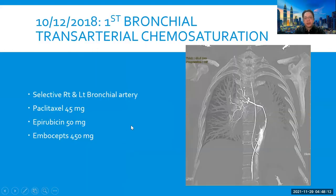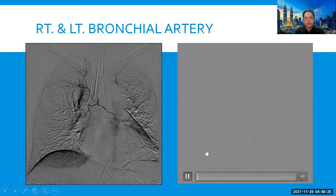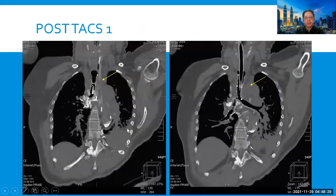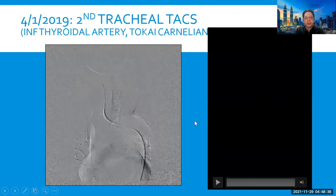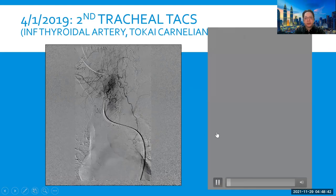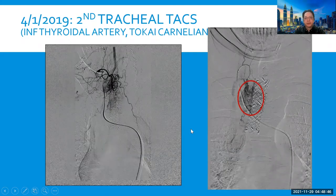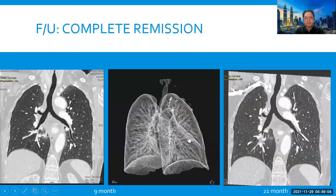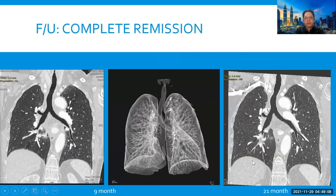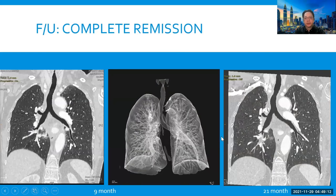During argon plasma coagulation, the probe sometimes caught fire, which was easily extinguished with normal saline. After two hours of intensive work, we managed to debulk the tumor over the carina. HPE showed no NGS and no cribriform pattern relevant to the cancer type was detected. A covered tracheal stent was inserted. Two weeks later, right and left bronchial artery transarterial chemo-saturation was performed with paclitaxel 45 mg and epi-adriamycin 50 mg, embolized with Embosphere 50 mg. Post-embolization showed dense staining of the tumor in the upper third. PET-CT three months later showed marked partial response. The residual tumor in the upper third was embolized through the inferior thyroid artery with the same protocol. Additional neoadjuvant IV cisplatin for three cycles and adjunctive SBRT five fractions was performed after the third session of APC. At nine-month follow-up and 21-month follow-up, complete remission and recanalization of the trachea were achieved, and the stent was removed.